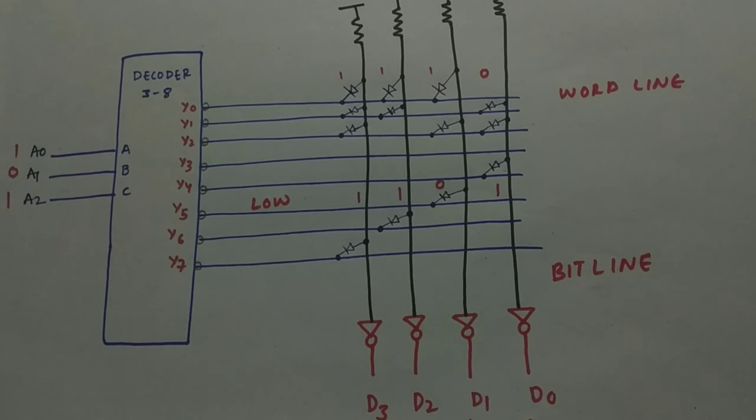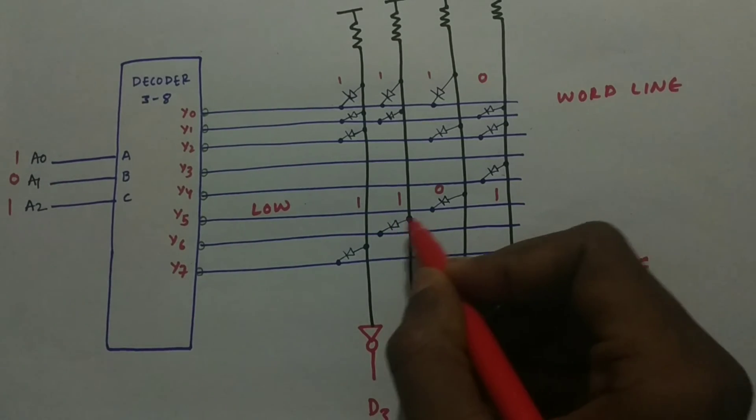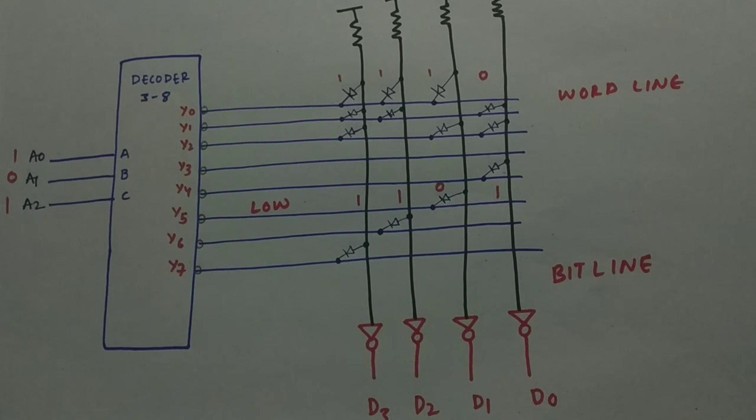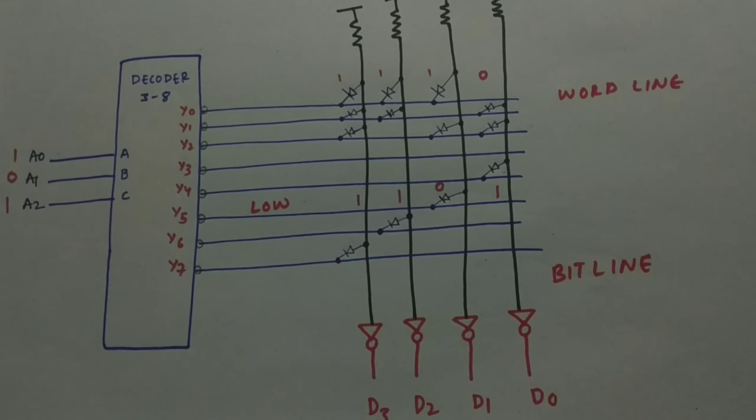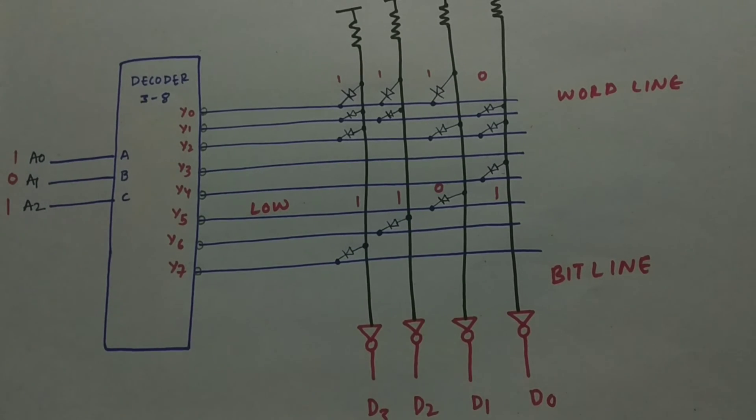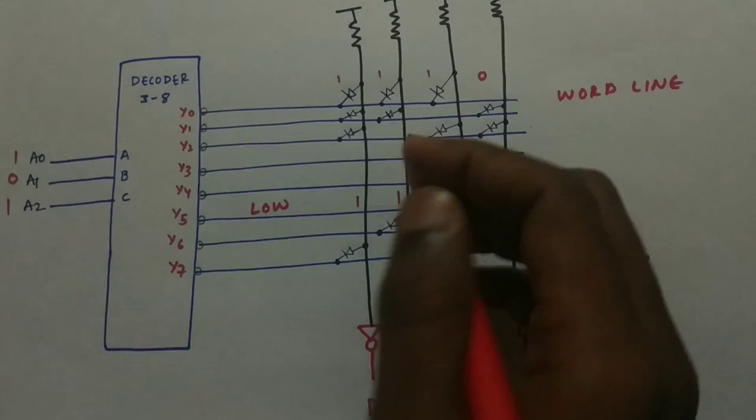In previous generations where the ROM was used, we need to connect the diodes using the soldering. We need to connect the diode according to our truth table. So it was a hectic task. Now we don't use this. All we use is a programmable ROM. We will get from the market. We will just program the ROM according to our usage. But in the previous days, they used to solder it. And for testing, they used to remove the solder and keep the diodes accordingly and test for the different inputs. That was a hectic task.